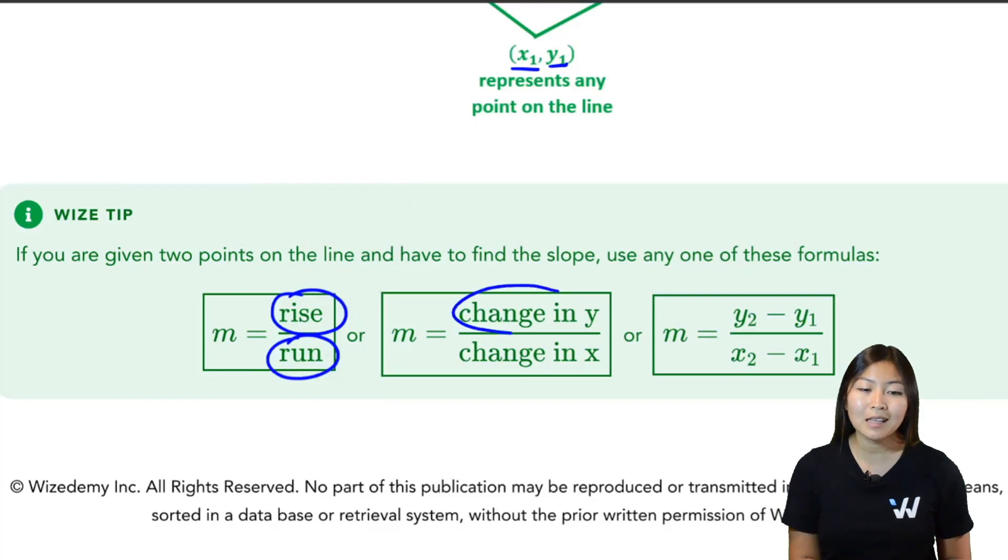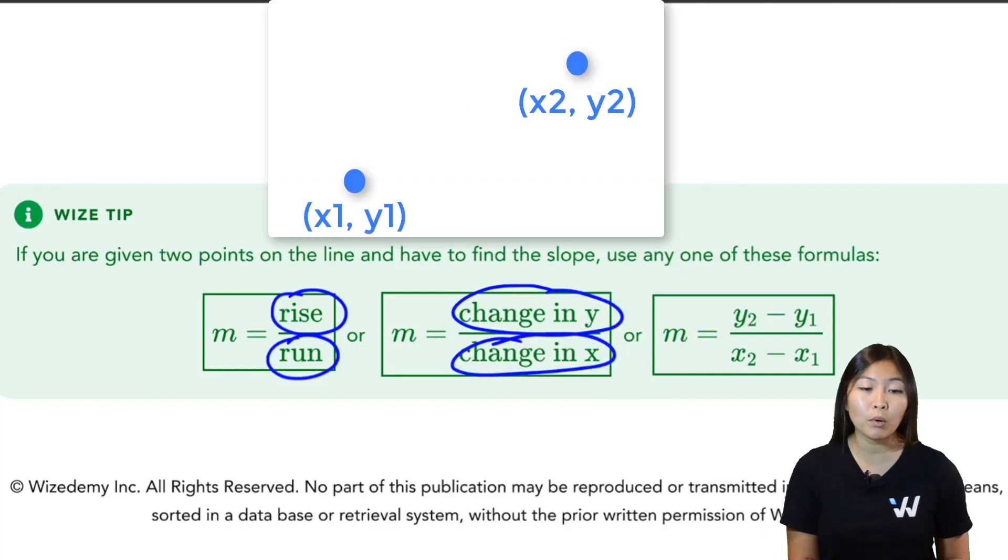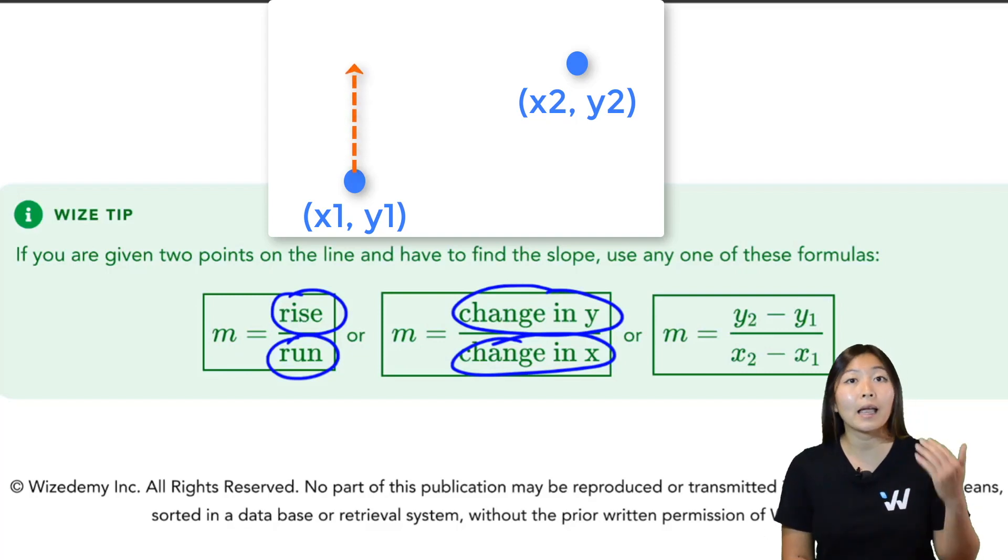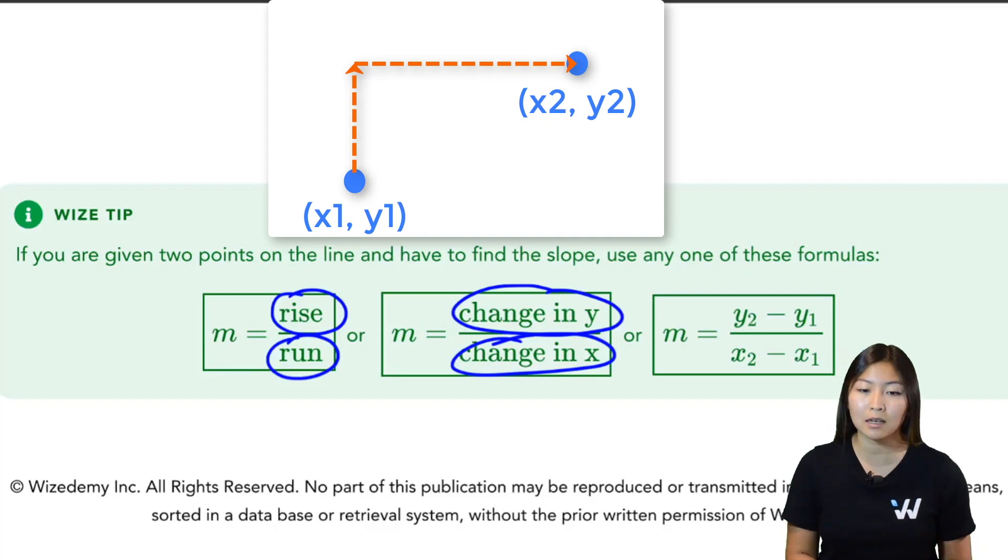Another way of thinking of this is that it's the change in y over the change in x. So if you're given a graph and you have two points, you're going to take one of the points and you're going to figure out how do I have to change the y to get to the second point divided by how do I have to change the x to get to the second point.